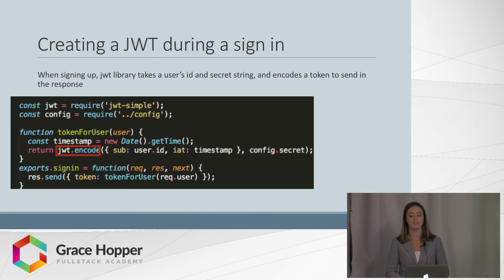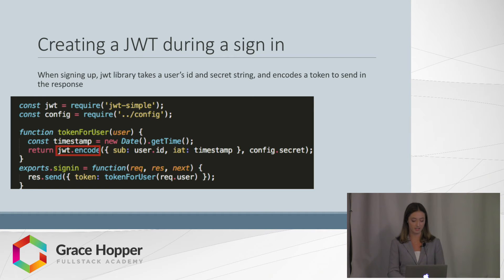JWT simple is a library used to create a token for a given user. During sign-in, after the user is authenticated, the token for user method creates an encoded token for the user.